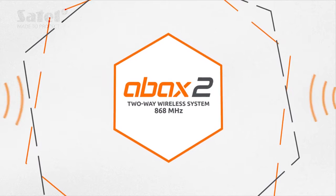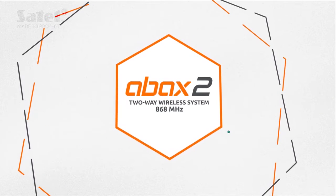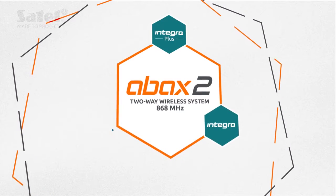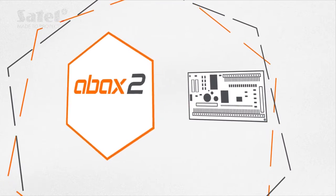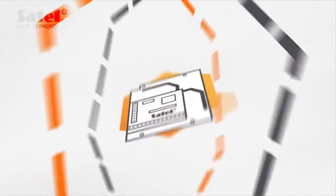ABAX2 is a high-performance two-way wireless system working with the Integra, Integra Plus and Versa systems. It is compatible with any alarm control panel or may be used as a standalone system.